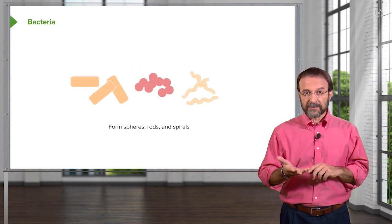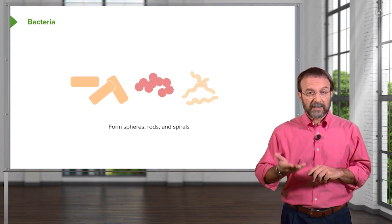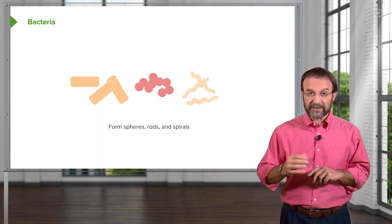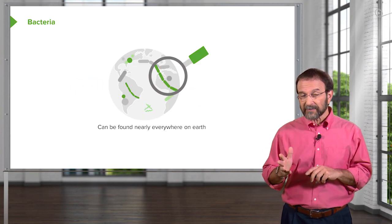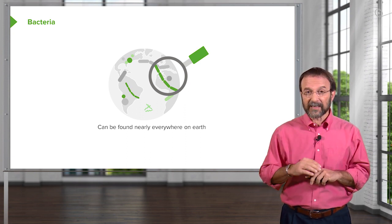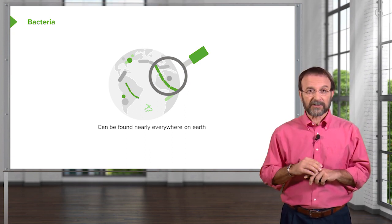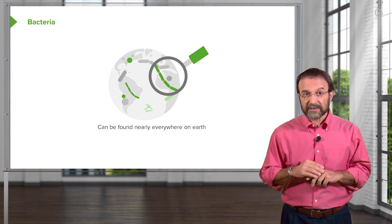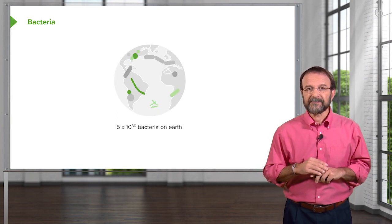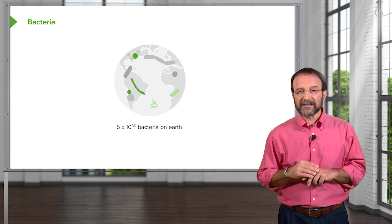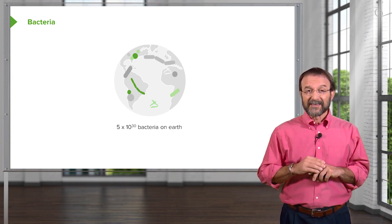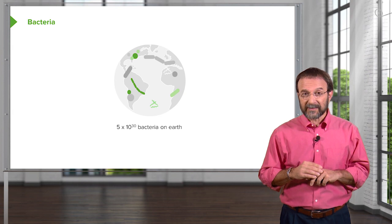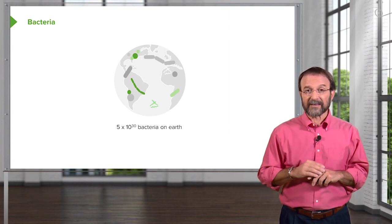Bacteria form spheres, rods, and spirals, so they look differently under the microscope. They're found everywhere on Earth — not just in you and on you, but on every animal, in the oceans, the soils, and even the skies. The number of bacteria on Earth is an impressive number: five times ten to the thirtieth. They outnumber every living thing on the planet.